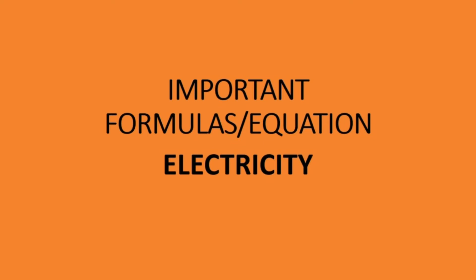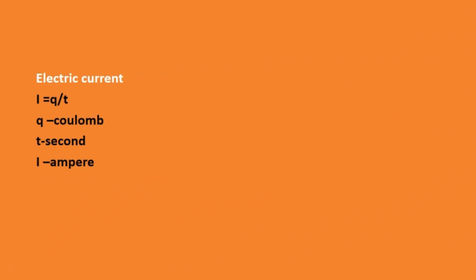Hi friends, today we are going to see about some important formulas and equations from electricity. The first one is electric current. Electric current I is defined as charge per time, that is Q by T. Charge is measured in coulombs and time is in seconds. The unit of current I is ampere.